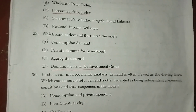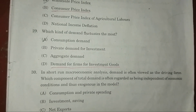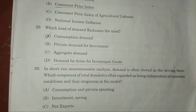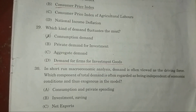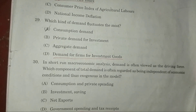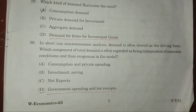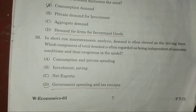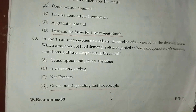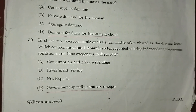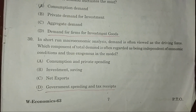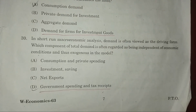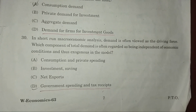Question 29: Which kind of demand fluctuates most? Answer: D — demand for investment goods. Question 30: In short-run macroeconomic analysis, demand is often viewed as a driving force. Which component of total demand is regarded as exogenous in the model?